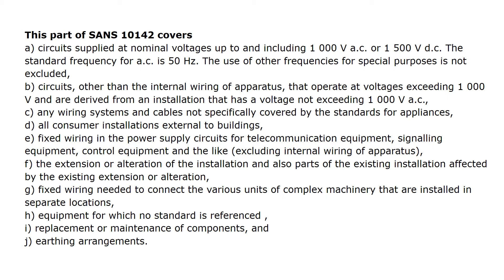C. Any wiring systems and cables not specifically covered by the standards for appliances. D. All consumer installations external to buildings. E. Fixed wiring in the power supply circuits for telecommunication equipment, signalling equipment, control equipment and the like, excluding internal wiring of apparatus. F. The extension or alteration of the installation, and also parts of the existing installation affected by the extension or alteration. G.